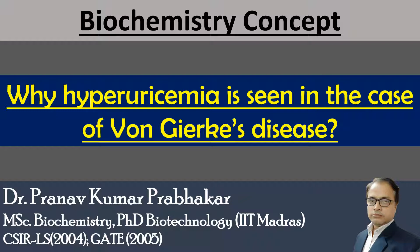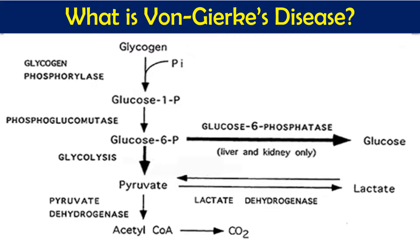You might have known that Von Gierke disease is a glycogen storage disease, and hyperuricemia is a disorder where we have a high amount of uric acid in blood circulation. First we are going to see what is Von Gierke disease. Von Gierke disease is the type 1 glycogen storage disease, and in this case we have a deficiency of one important enzyme: glucose-6-phosphatase.